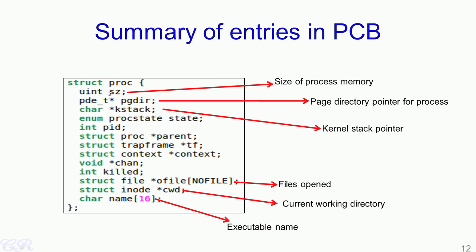This particular structure is taken from the xv6 operating system's PCB, which is defined as struct proc. Some of the important elements of this structure are: Sz, which is the size of the process memory; PGDIR, which is a pointer to the page directory for the process; KStack, which is a pointer to the kernel stack; and other aspects such as the list of files opened by the process, the current working directory, and the executable name — for instance, a.out in our example. We will look at some of these other parameters in the forthcoming slides.